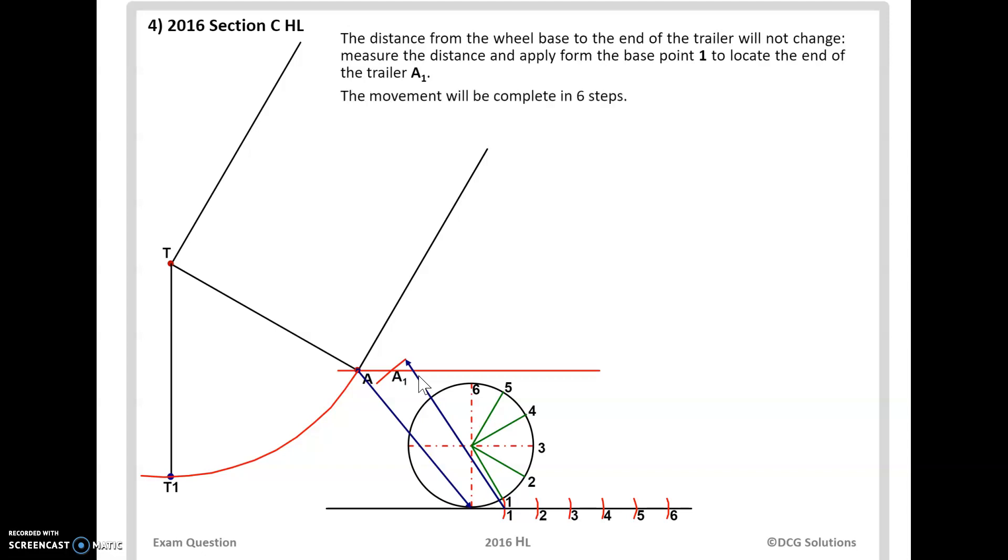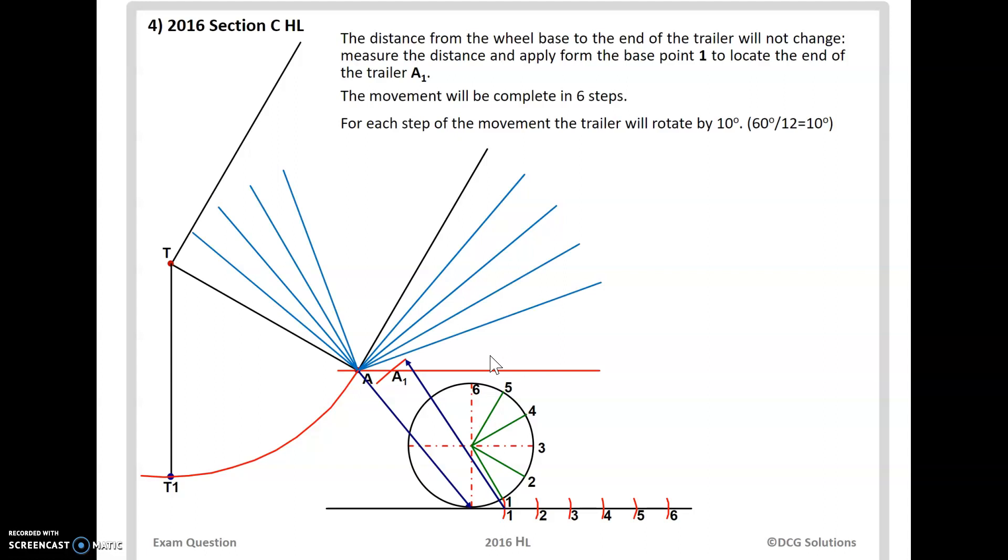All right the movement will be complete in six steps. For each step the movement of the trailer will be rotated by 10 degrees. Okay the reason we're using 10 is 60 degrees divided by 6 because we have six movements. So it's going to be 10 degrees. Our next one here is going to be up there and there. That's the way it's going to move.